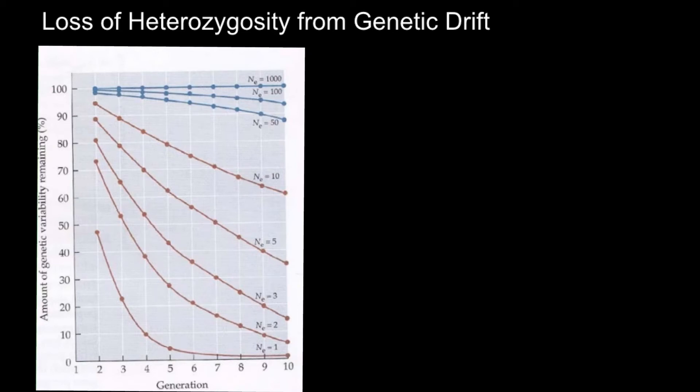Today I prepared another population genetics video, and I'm going to talk about loss of heterozygosity from genetic drift. Probably most of you understand the concept that if we start a new population with just a few animals or few plants, this might lead to a situation where in a few generations, due to genetic load and loss of variability, such a population would eventually die.